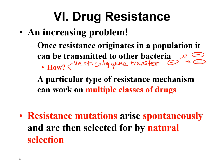The other way bacteria can transmit antibiotic resistance genes is horizontal gene transfer. With vertical gene transfer, we're transmitting genes from one generation to the next. With horizontal gene transfer, you're giving genes to an organism in the same generation.